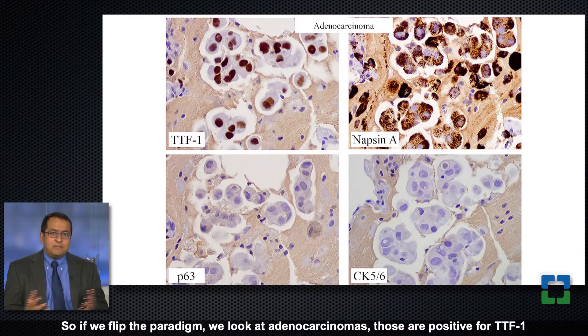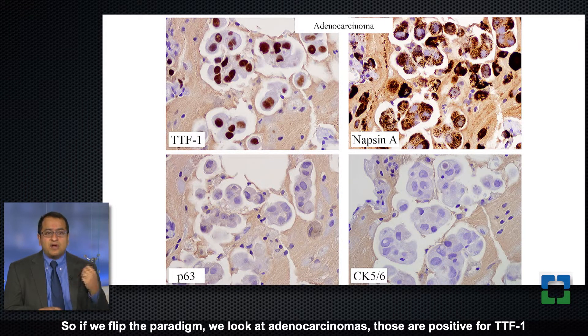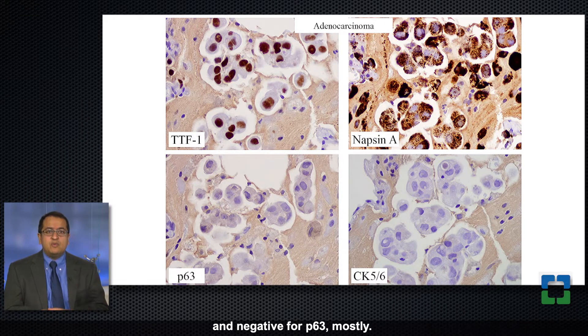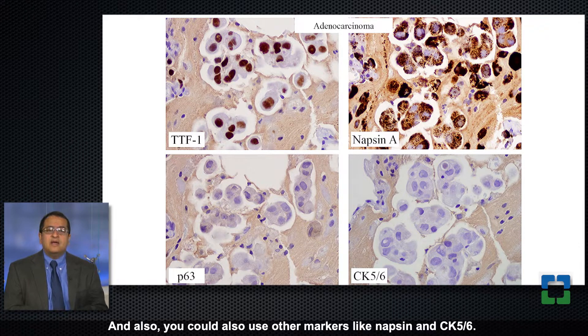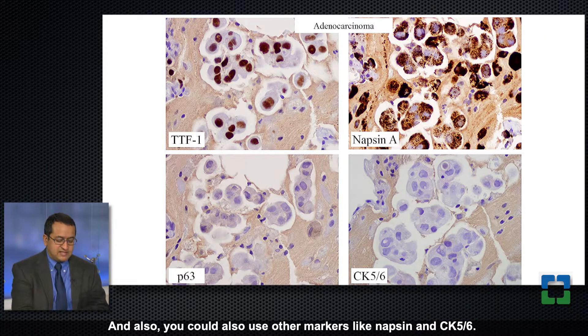If we flip the paradigm, adenocarcinomas are positive for TTF1 and negative for p63 mostly. You could also use other markers like Napsin and CK5/6.